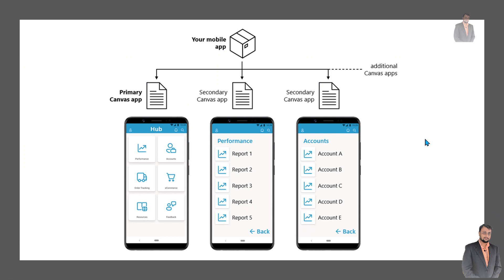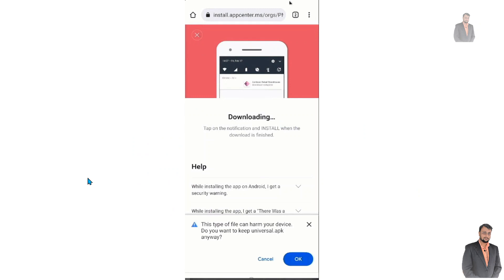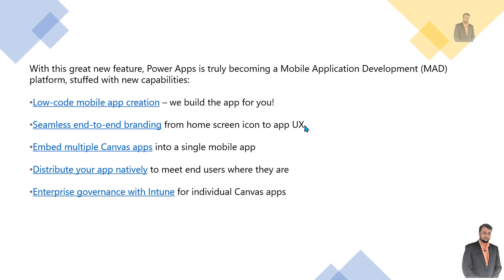You can also embed multiple apps. For your organization, if you have developed a couple of apps and need a hub navigation where the user opens the app and all apps are displayed — clicking an appropriate app opens that app — this is possible with this new update. Power Apps is truly becoming a mobile application development platform with capabilities like low-code mobile app creation, seamless end-to-end branding, embedded multiple Canvas apps, native app distribution, and enterprise governance with iTunes.